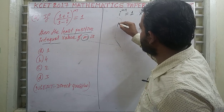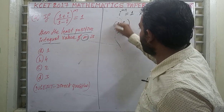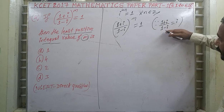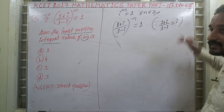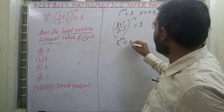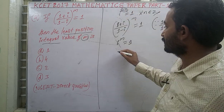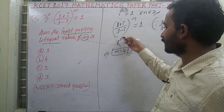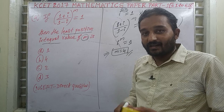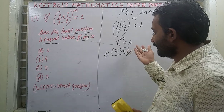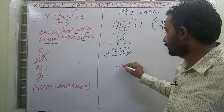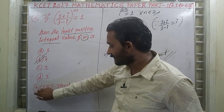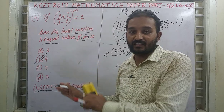Now (1+i)/(1−i) simplifies to i, and (1−i)/(1+i) simplifies to −i. So (1+i)/(1−i) = i. Substituting, i^m = 1, which means m = 4n. The least positive integer value is m = 4, since i⁴ = 1. The next values would be 8, 12, etc., but the least is 4. Therefore option B, m = 4, is correct. This is an NCERT direct question.